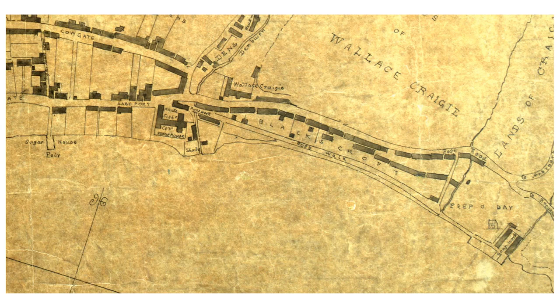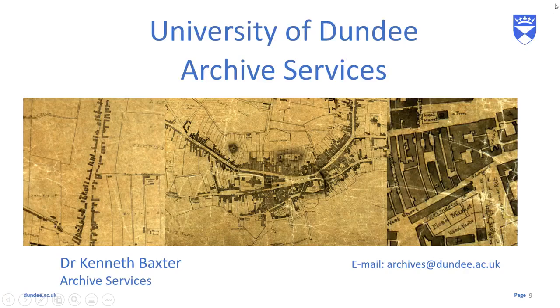There you see Peep o' Day House. Of course, that's one of Dundee's more interesting street names because we've still got Peep o' Day Lane to this day. You also see Wallace Craigie, which was a great area of Dundee and did survive in, for example, the name of Wallace Craigie Works, but is today a name not as well known as it once was. So I hope you've enjoyed that brief discussion of some of the highlights of the map. Do get in touch if you want to know more. In the meantime, stay safe, take care, and we'll talk again.